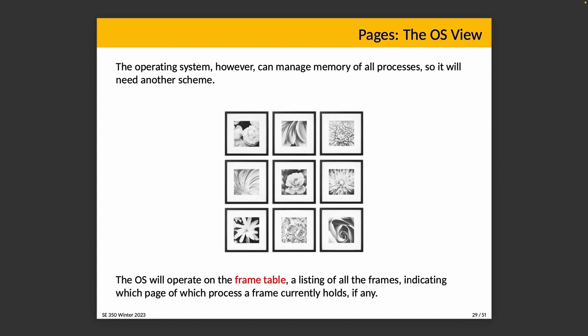The operating system manages memory for all processes and uses a frame table — the converse of the page table — which is a listing of all frames indicating which page of which process each frame currently holds. This gives the OS a quick overview of who is where, more efficiently than checking page tables for potentially hundreds of processes.